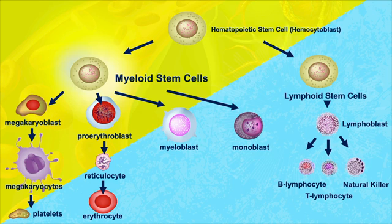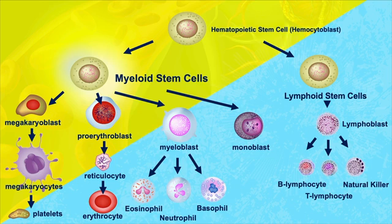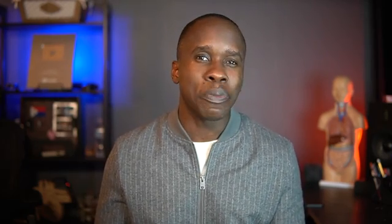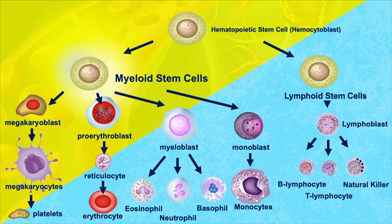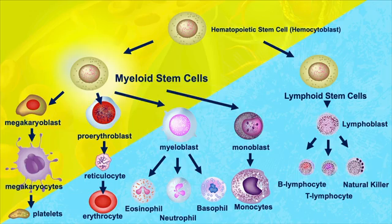The myeloblast can differentiate into three different cells: basophils, neutrophils, or eosinophils. These are three types of white blood cells we call the granulocytes — you can tell they are granulocytes because if you look at them under a microscope, you'll see little dots or granules inside the cell. And lastly, we have the monoblast — monoblasts become monocytes, another white blood cell involved in the immune system. And now we have all of the formed elements of the blood: B and T cells, natural killer cells from the lymphoid stem cells, and monocytes, eosinophils, neutrophils, basophils, erythrocytes, and platelets from the megakaryocytes.